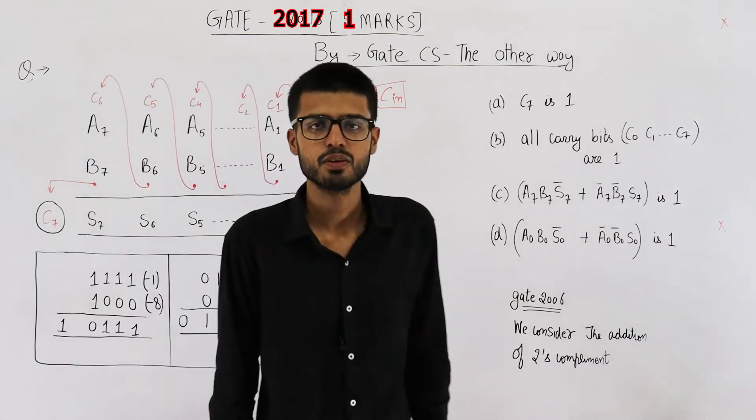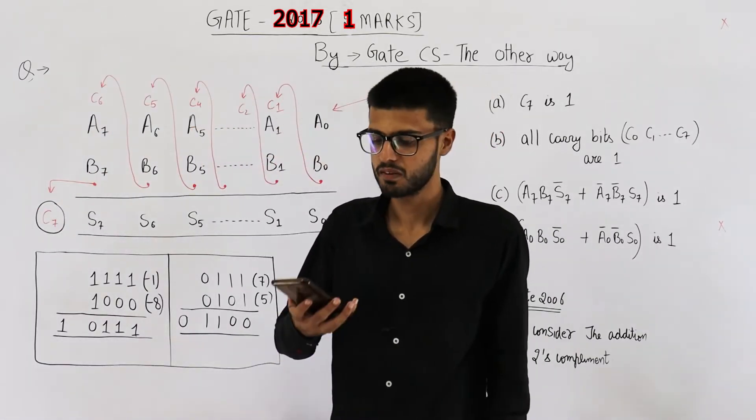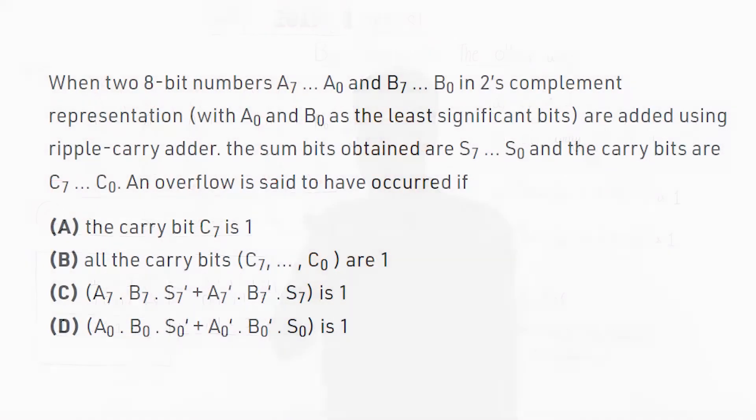So let's have a look at the statement, then we are going to solve it. When two 8-bit numbers A7 to A0 and B7 to B0 in 2's complement representation with A0 and B0 as the least significant bits are added using a ripple carry adder, the sum bits obtained are S7 to S0, and the carry bits are C7 to C0.